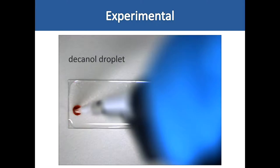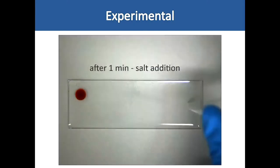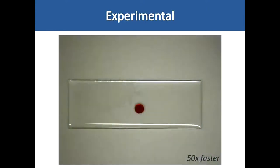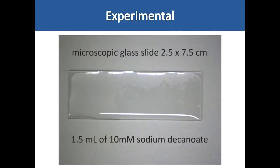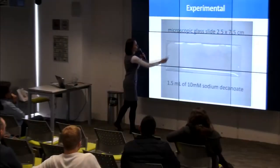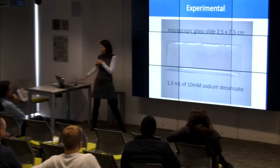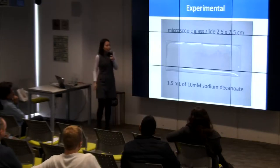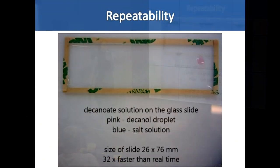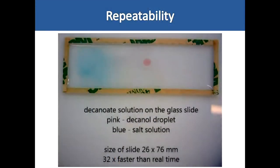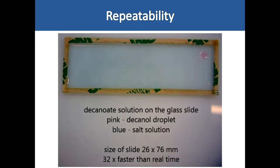I have a glass slide, usually 7.5 cm × 2.5 cm. I add the aqueous solution of sodium decanoate, then a decanol droplet, and add salt to the other side — and the droplet follows the salt additions. This movement is very reproducible; the decanol droplet always follows the additions of salt. This behavior is due to Marangoni flows, because we change the surface tension and create gradients of surface tension, which causes the droplet to move towards the salt.